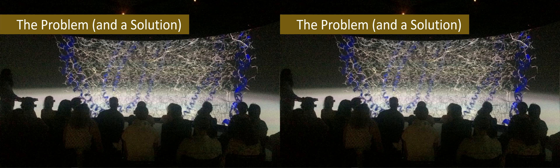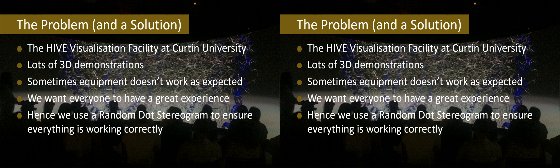So the problem is this, and fortunately we also have a solution, which is a nice loop to have. At the visualization facility I run at Curtin University called the Hive, we do a lot of 3D demonstrations, and occasionally the equipment doesn't work quite as we would expect, and we really do want everyone to have a great experience. The solution we found is a very quick slide at the front of any demonstration — a random dot stereogram to ensure everything is working correctly.